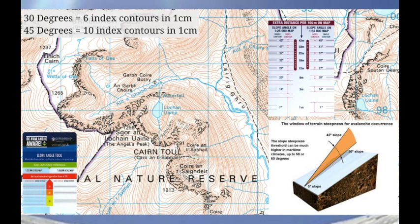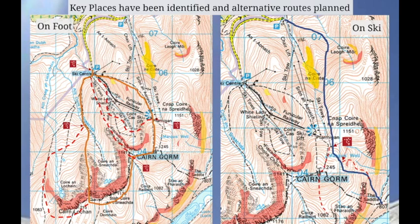When it comes to avalanche terrain, we're identifying aspect, angles, and altitude. Avalanches start on terrain that is steep enough - that's between 30 degrees and 45 degrees, with a sweet spot around 38 degrees. We can use either a ruler and measure the index contours: 30 degrees is equal to 6 index contours in a centimetre, and 45 degrees is 10 index contours in a centimetre. There are other tools out there to help identify slope angle; one is from the Shaven Raspberry website. Using the weather and conditions and your map reading skills, we can then come up with a route plan.